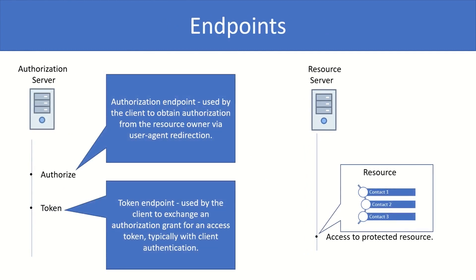Talking about the core endpoints: the first is the authorize endpoint, hosted by the authorization server. The authorization endpoint is used by the client to obtain authorization from the resource owner via user-agent redirects. The user uses the browser to access your application; your application redirects the user to the authorize endpoint, which validates user credentials, gets consent approved, validates your client ID, and sends a response back.